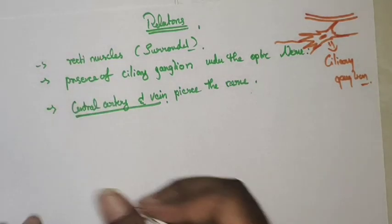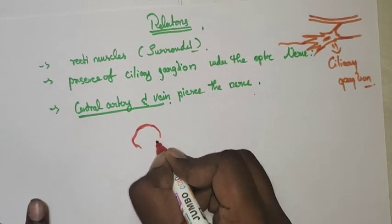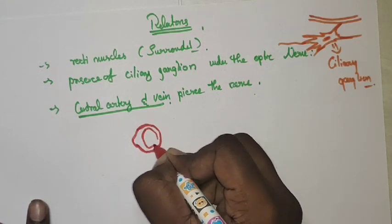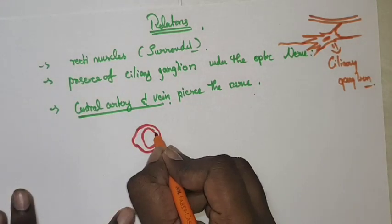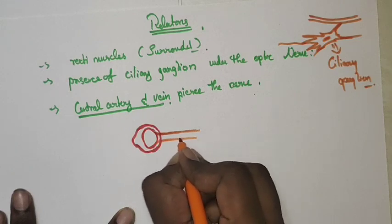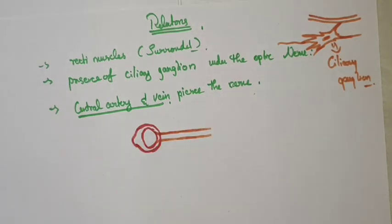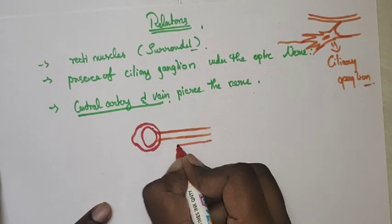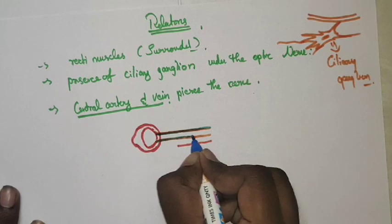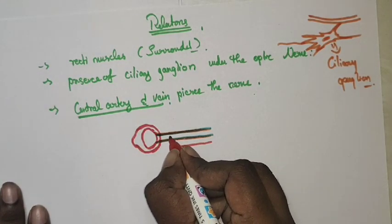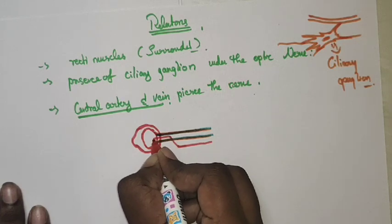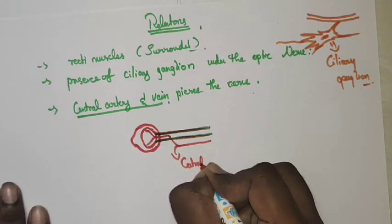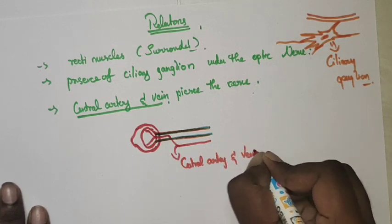The third relation: the central artery and vein of the retina pierce the nerve. Imagine this to be the eyeball, inside which the retina is placed, and this is your optic nerve. The central artery and vein of the retina come from the side, and posterior to the eyeball they pierce the optic nerve and enter into the eyeball to supply the retina.